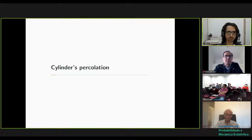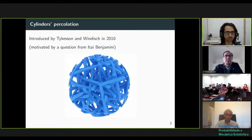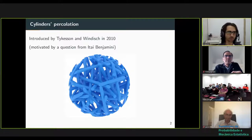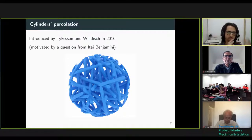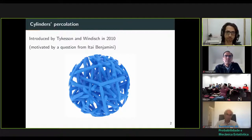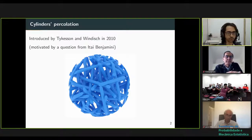So first, what cylinder percolation is. I'm going to define the model rigorously, but I wanted to give a taste of what it is. This is a nice simulation done by Caio - a 3D rendering, which is quite rare in probability communities. We have a model that gives us a random subset of R3. This subset is in the whole R3, so it's very hard to visualize. The way Caio found to visualize it is to cut a ball of the set. This is an infinite set that extends throughout R3 - it's actually ergodic. This model was introduced by Teixeira and Windisch in 2010, by a question from Itai Benjamini.